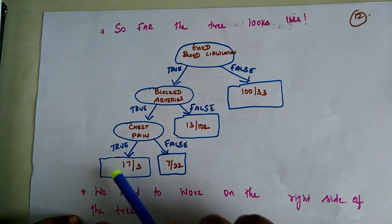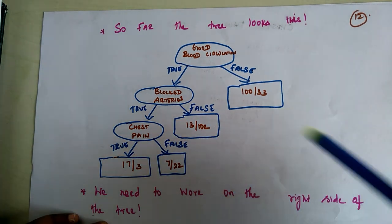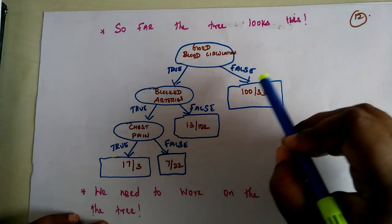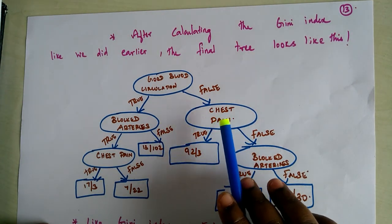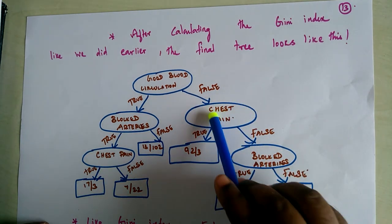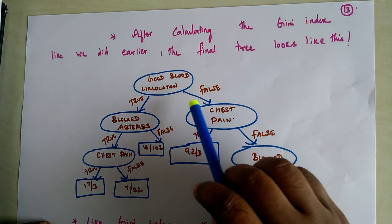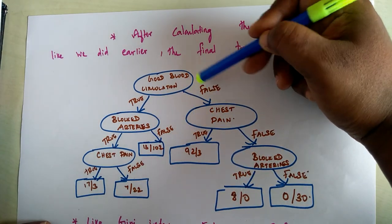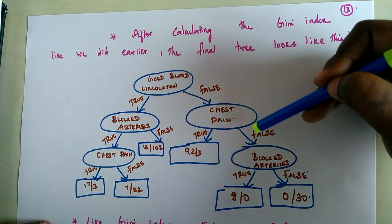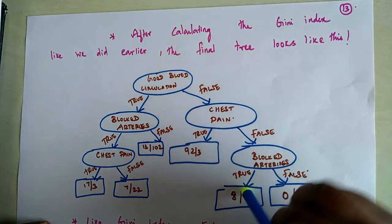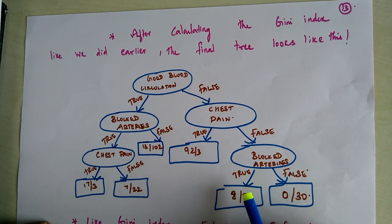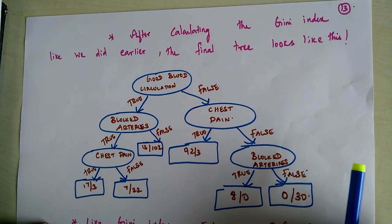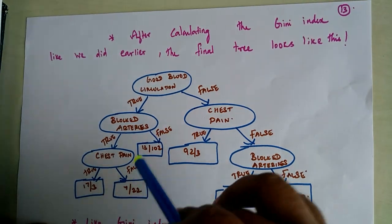So the left part of the tree is completed without adding chest pain to that branch. Now we work on the right part of the tree — patients without good blood circulation. On the right side, chest pain had priority over blocked arteries. When the patient did not have good blood circulation and did not have chest pain but had blocked arteries, 8 patients had heart disease and nobody fell into the other class.